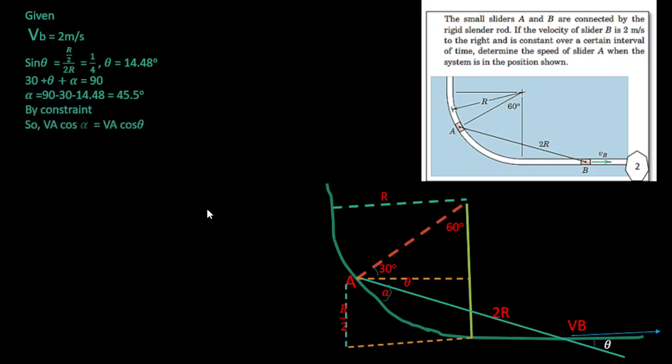By constraint, velocity of B times cos theta equals velocity of A times cos alpha. Then we can substitute the given values and get the unknown values. So the velocity of A equals 2.756 meters per second.